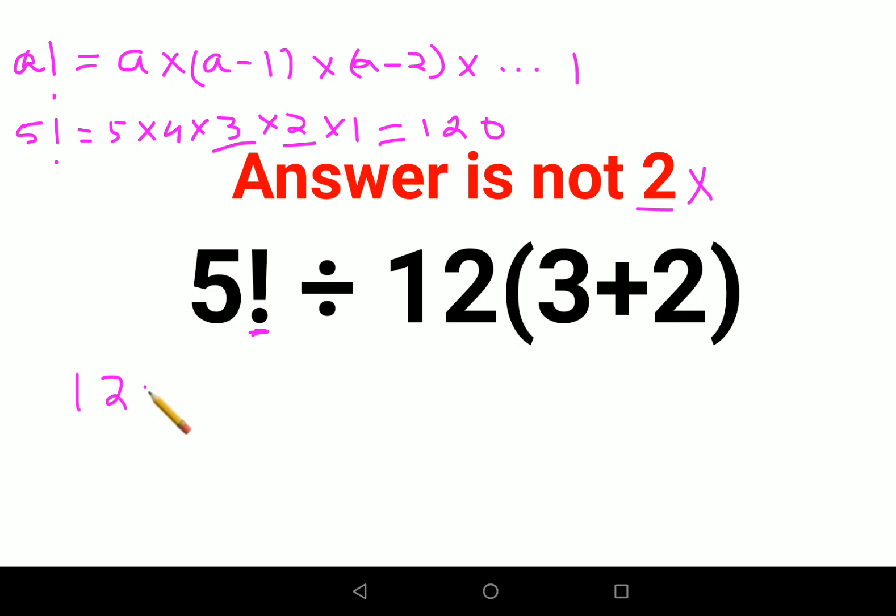We have 120 ÷ 12. Now first, please understand if you are following BODMAS or PEMDAS, in both cases you need to remember that parentheses or brackets have to be done first. So here we know the bracket value is 3 + 2 which is 5.